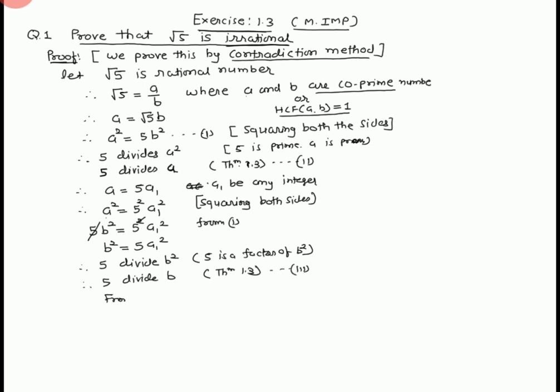From equation 2 and 3, 5 divides a and 5 divides b. Therefore, 5 is a common factor of a and b. Therefore, HCF of a and b equals 5, they are not co-primes.